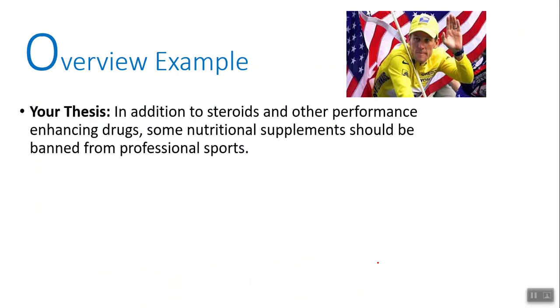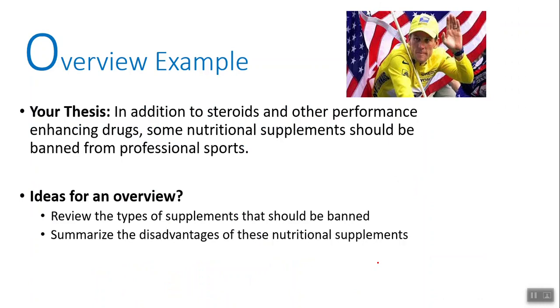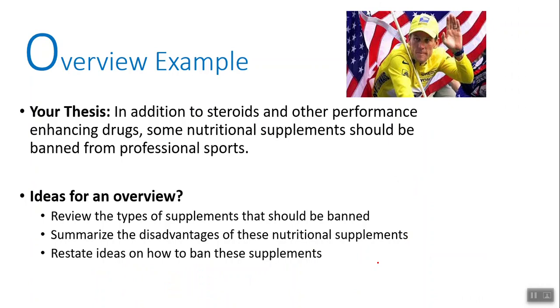Overview example — the thesis: 'In addition to steroids and other performance enhancing drugs, some nutritional supplements should be banned from professional sports.' Ideas for an overview: they could review the types of supplements that should be banned, summarize the disadvantages of those nutritional supplements, and restate ideas on how to ban those supplements. Those were basically their three reasons — the types of supplements, why they should be banned, and how the ban would actually work.